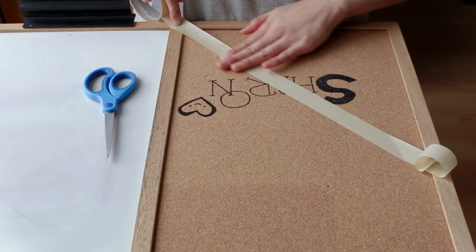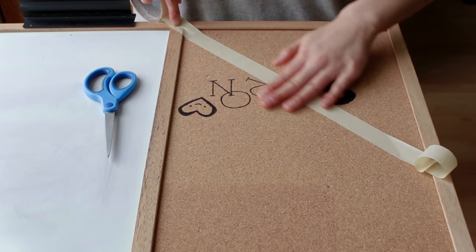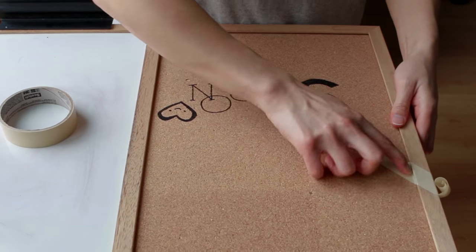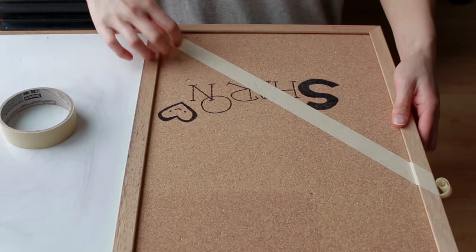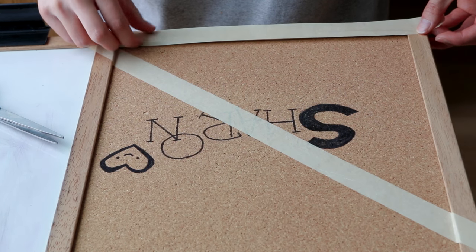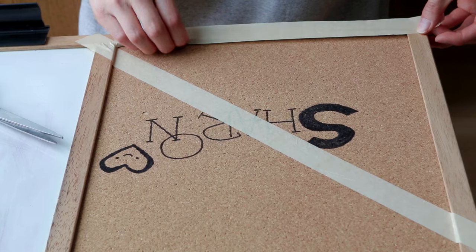Alrighty, so let's begin with the corkboard side. You're going to take some masking tape and tape off the section that you want to paint. I decided to go with two triangles so I'm just making sure that it lines up with the edges and the corners and you're also going to tape off the border because you don't want to get any paint on that.